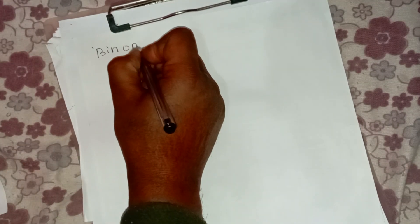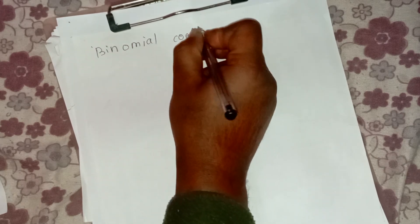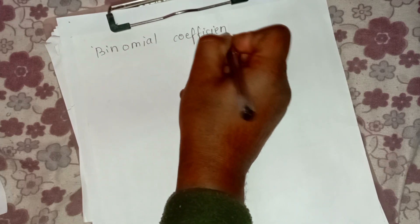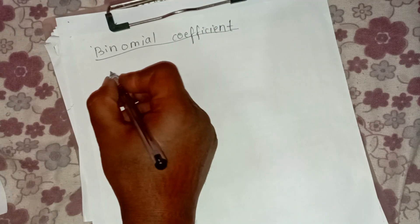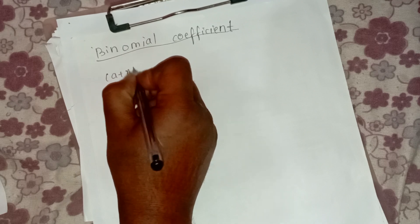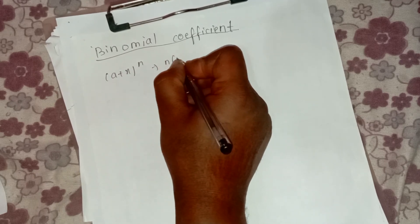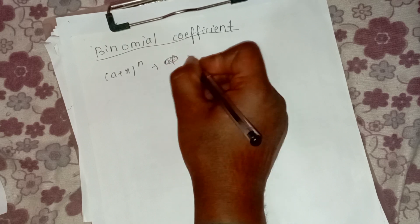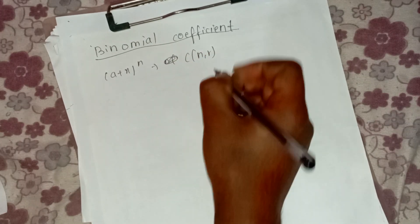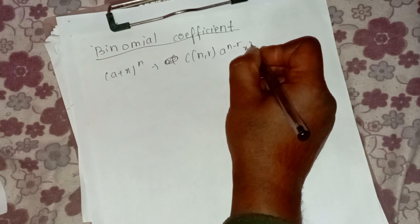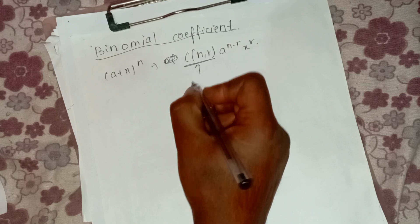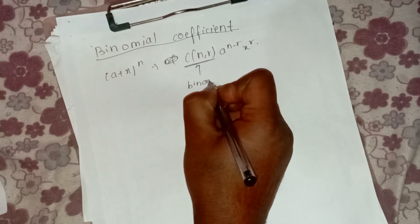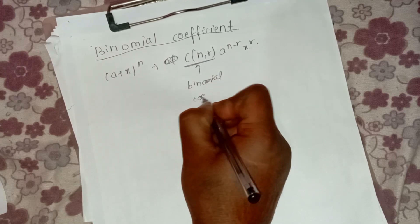The coefficients C(n, r) in this expansion are called the binomial coefficients. We can expand this formula as: C(n, r) times a to the power (n minus r) times x to the power r. This is what we call the binomial coefficient.